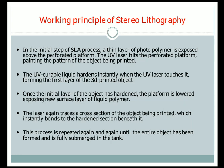The laser beam again traces a cross-section of the object being printed, which instantly bonds to the hardened section beneath it. This process is repeated again and again — fresh liquid polymer is exposed, the laser traces the cross-section, that layer hardens, and the platform moves down — until the entire object has been formed and is fully submerged in the tank.